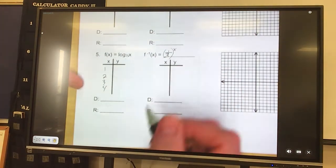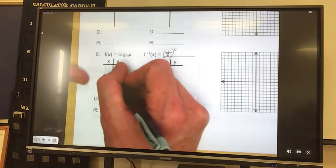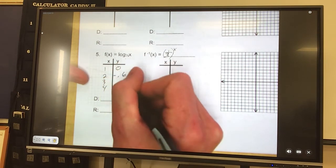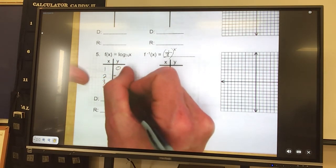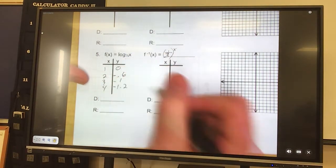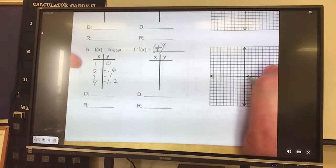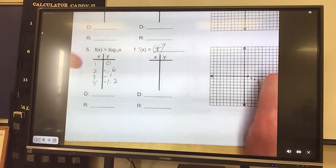1 is 0, 2 is negative 0.6, 3 is negative 1, and 4 is negative 1.2. So we go over here, 1, 0, put a point. Over 2 down 0.6, over 3 down 1, over 4 down 1.2.